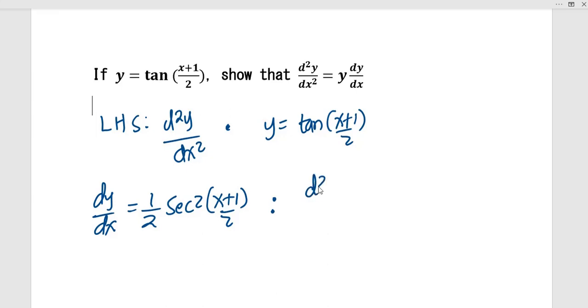What about d²y/dx²? What is it? I have to differentiate this again so that I have a half times - if I differentiate this sec squared, I will have a 2 now times tan of (x+1)/2, times actually a half sec squared (x+1)/2.